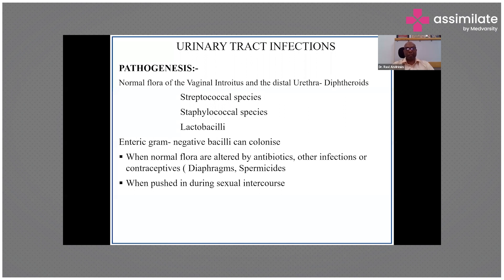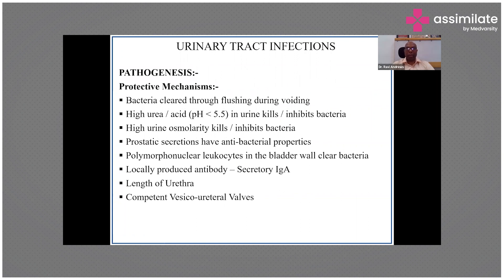When normal flora is altered, gram-negative bacteria can colonize and start a urinary tract infection. Also during sexual intercourse, bacteria can be pushed in from the distal urethra of the male or from the vaginal introitus of the female and enter the urinary tract. The body's first defense is mechanical — when you pass urine, bacteria are removed by voiding, a flushing mechanism. That's why nephrologists advise drinking plenty of water; it helps reduce the chance of infection. High urea levels in the urine also kill or inhibit bacterial growth.